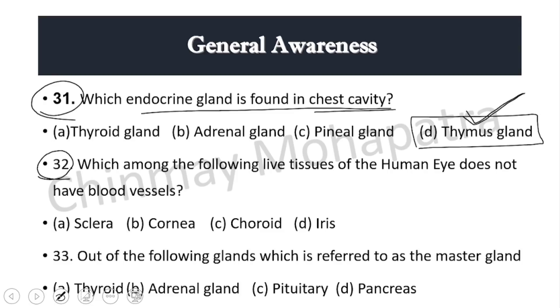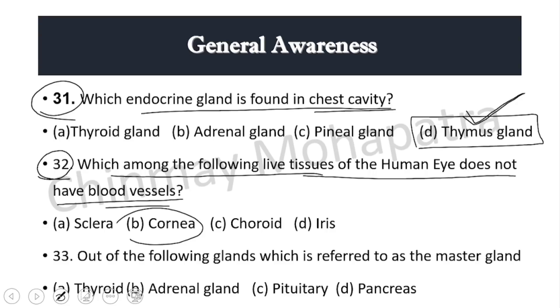Question 32: Which live tissue of the human eye does not have blood vessels? The right answer is the cornea — blood vessels are not present in the cornea.